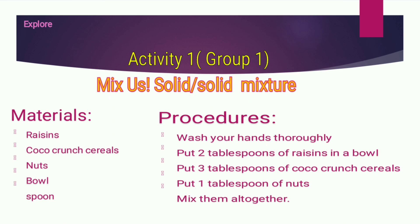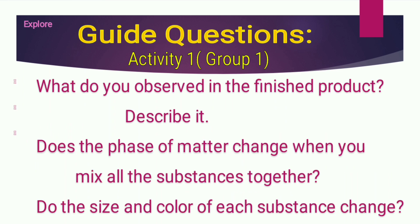Procedures: wash your hands thoroughly, put two tablespoons of raisins in a bowl, put three tablespoons of Coco Crunch cereals, and put one tablespoon of nuts. Mix them all together. After doing your experiment, you are going to answer the guide questions.